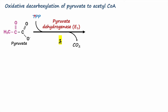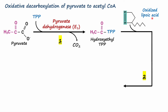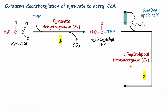Once the acetyl group is transferred onto thiamine pyrophosphate, it results in the formation of hydroxyethyl thiamine pyrophosphate. In step two, this hydroxyethyl thiamine pyrophosphate is transferred onto the oxidized form of lipoic acid, which is the coenzyme for dihydrolipoyl transacetylase E2 enzyme.